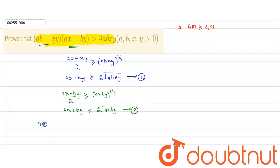Now, multiply, multiply first and second again. What we will get? We will get (ax + by) into (ab + xy) greater than what?